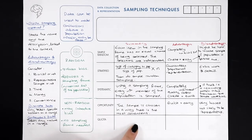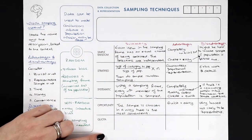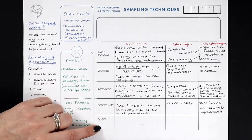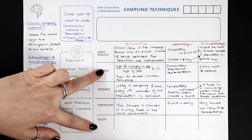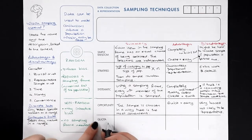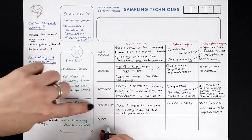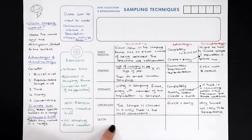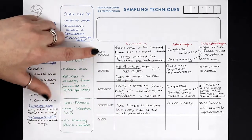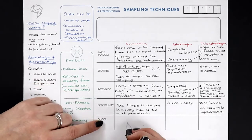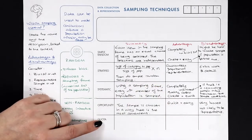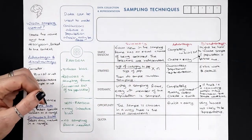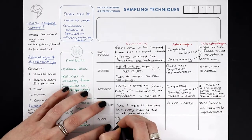Quota sampling is often used in market research — think of someone on the street asking questions. It's similar to stratified sampling in that the researcher is given a quota of how many from each group to ask. The difference is that within each stratum, selection is essentially opportunity-based rather than random. For example: ask 20 older people and 30 people under 20, then the researcher chooses freely within those quotas.